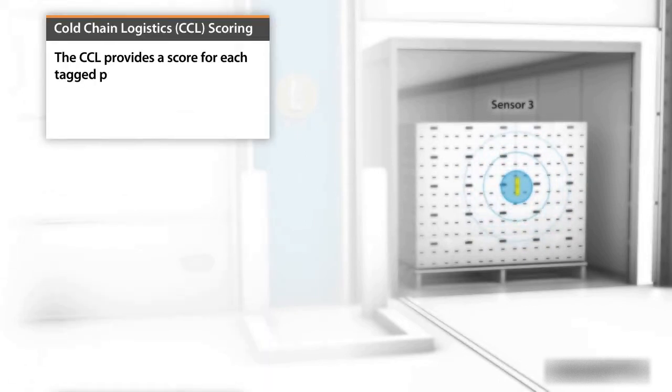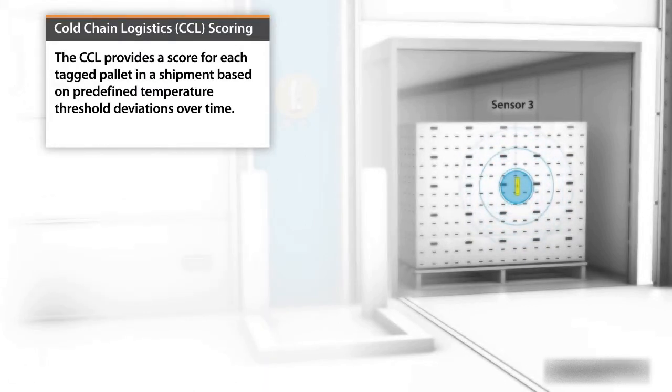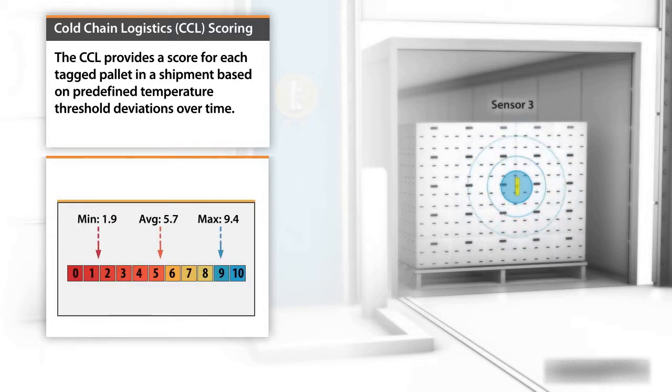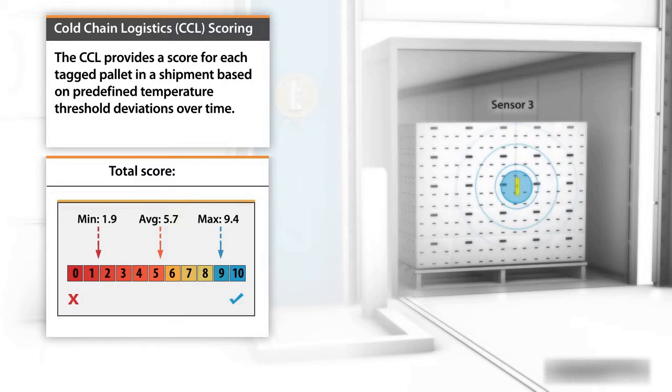The CCL provides a score for each monitored tag pallet in a shipment, based on predefined temperature threshold deviations over time.